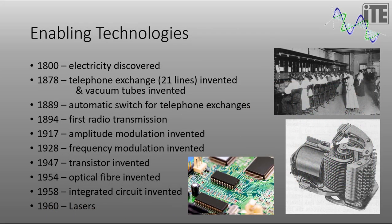Some of the enabling technologies that have allowed modern telecommunications to evolve: around 1800 electricity was discovered. In 1878 a telephone exchange with 21 lines was invented, and vacuum tubes were also invented, which allowed us to build circuits. And in 1889 the automatic switch for telephone exchanges, shown here at the bottom right, was invented. Prior to this, we actually had hundreds of operators manually switching telephone calls, as we can see in the diagram at the top.